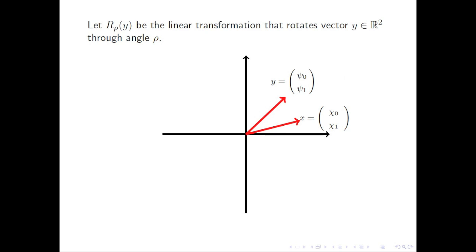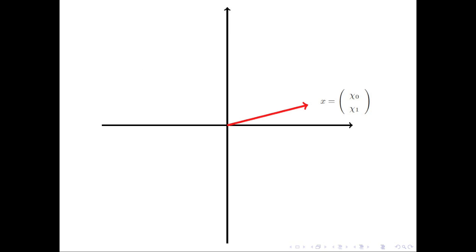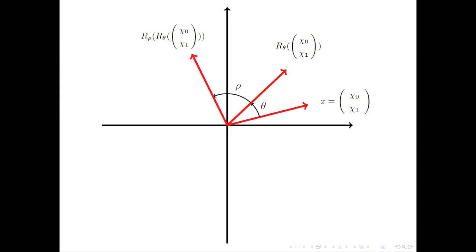Now, we can take the result vector — let's call it y — and rotate it through an angle rho. The result of that is given by r sub rho of y, and that rotation can be represented by a matrix that involves the cosine and sine of the angle rho. Rotating vector x first through angle theta and then through angle rho is an example of the composition of two linear transformations.